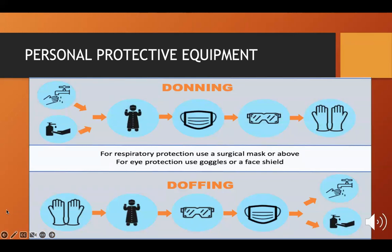To summarize: to don your PPE, practice hand hygiene, then put on your gown, then your mask, then your eye gear or goggles, and last, your gloves. When you need to doff or remove your PPE, the first to go would be your gloves, then your gown, then your eye shield or face shield or goggles, then your mask. At the end, practice hand hygiene.